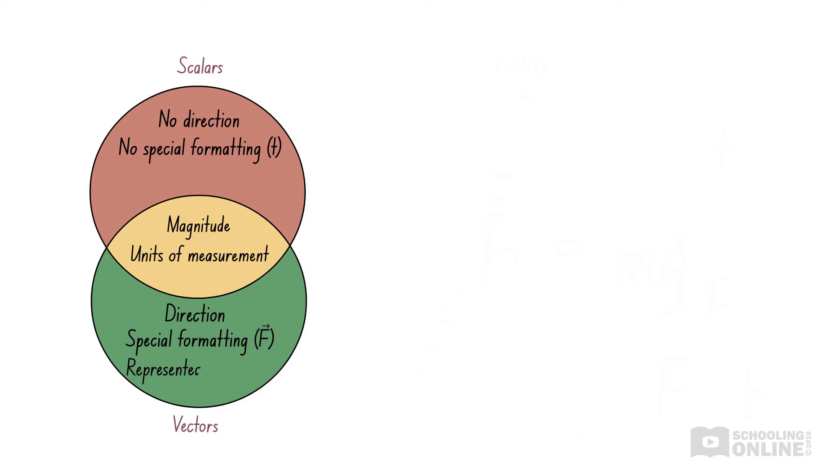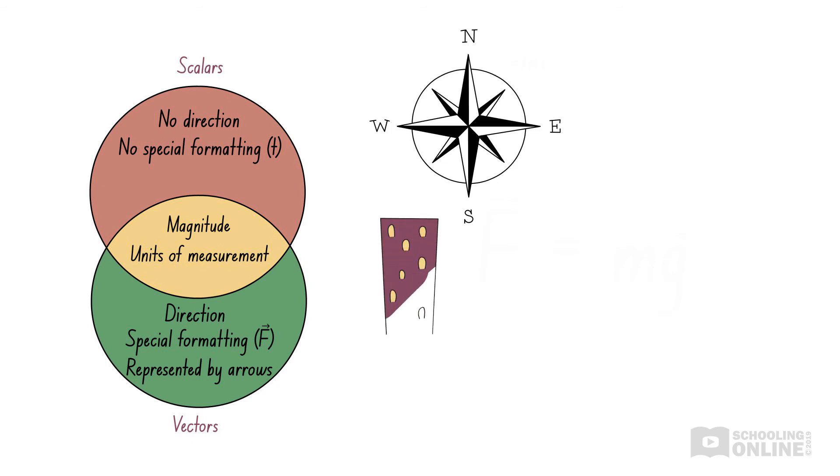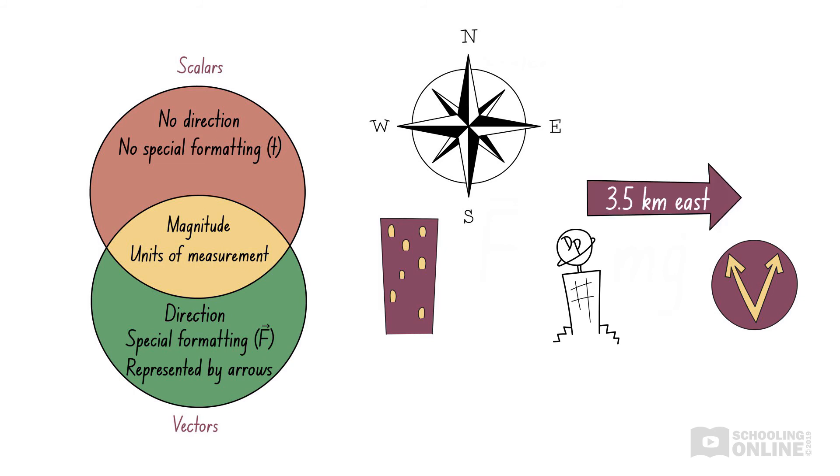The final difference between scalars and vectors occurs when drawing diagrams. Since vectors have a direction, we can represent them using arrows. For example, we can represent a displacement vector of 3.5 km east by drawing an arrow pointing right. Similarly, we can represent 7 km west by drawing an arrow pointing to the left. In this case, the length of the arrow represents the magnitude of the vector, while the head of the arrow indicates the direction.